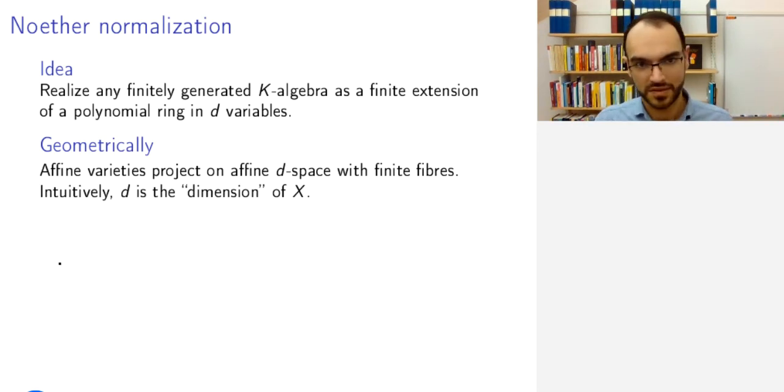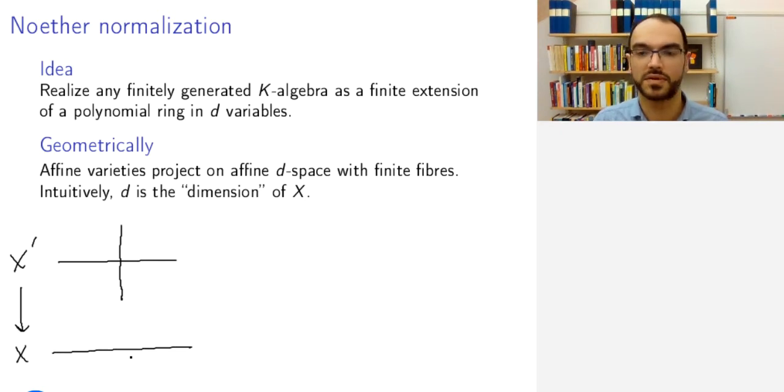Let's look at this coordinate cross. This is our x prime and then we have x, the affine line, and we have the coordinate projection onto the first coordinate. So the coordinate cross is embedded in A2, but this is really exaggerated. This is a one-dimensional object fundamentally.